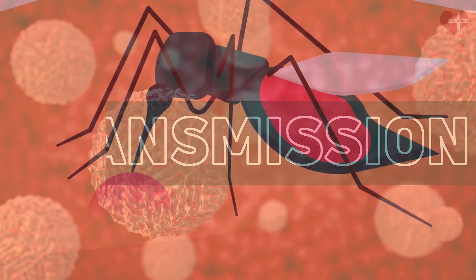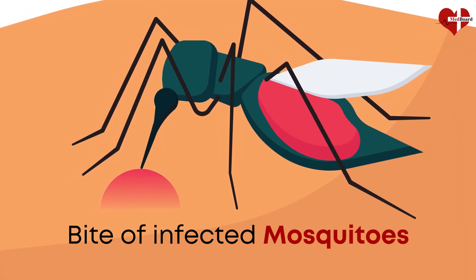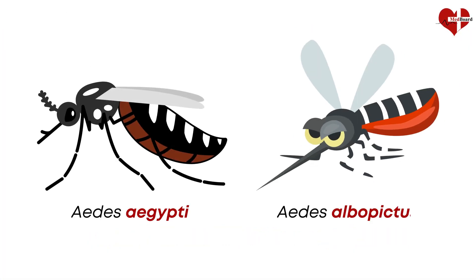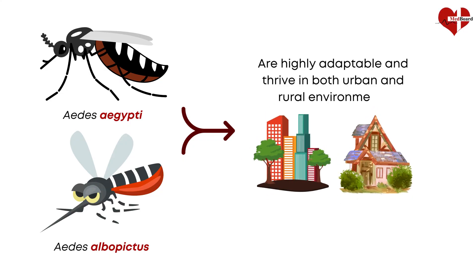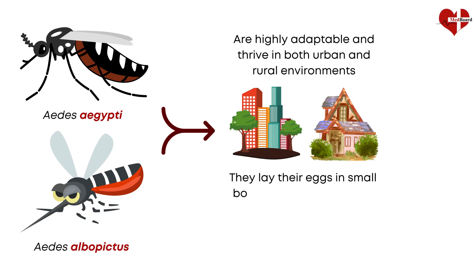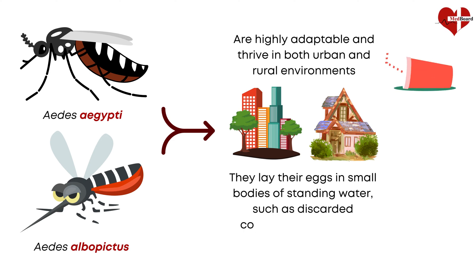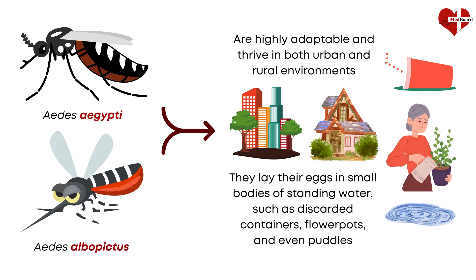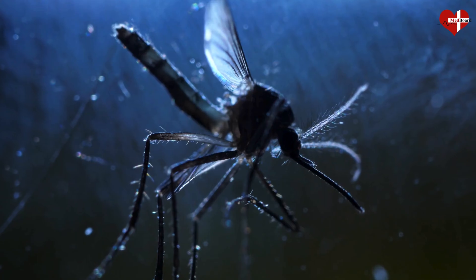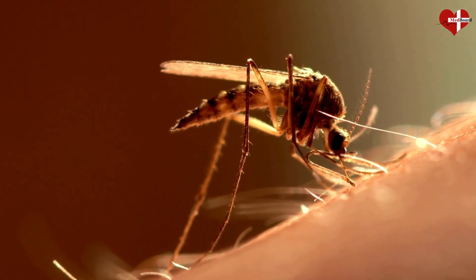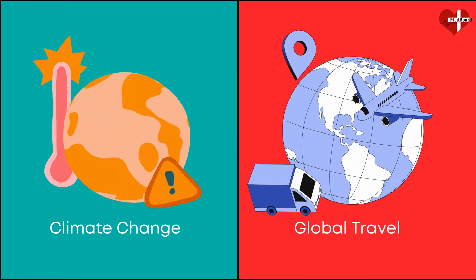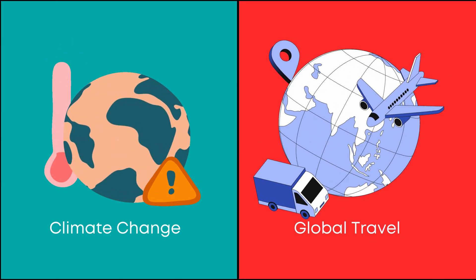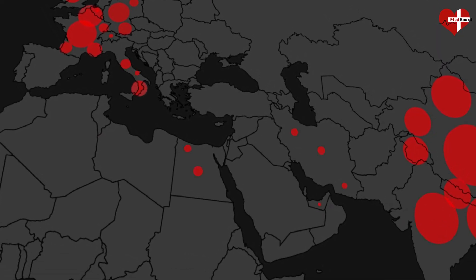Chikungunya is primarily transmitted through the bite of infected mosquitoes, specifically Aedes aegypti and Aedes albopictus. These mosquitoes are highly adaptable and thrive in both urban and rural environments. They lay their eggs in small bodies of standing water, such as discarded containers, flowerpots, and even puddles. Their aggressive daytime feeding behavior means they can transmit the virus when people are more active outdoors. Climate change and global travel have facilitated the spread of these mosquitoes to new regions, increasing the likelihood of outbreaks in previously unaffected areas.